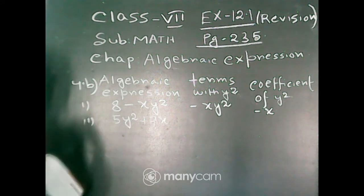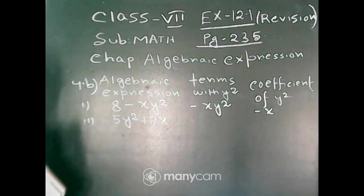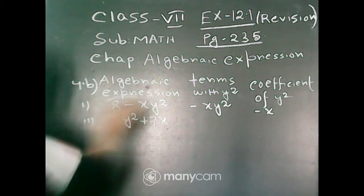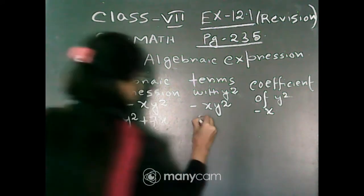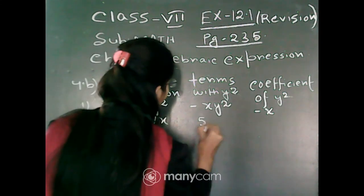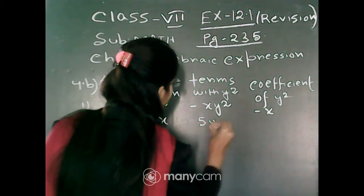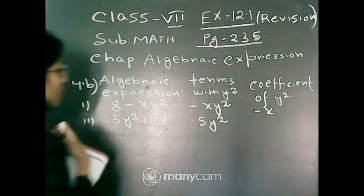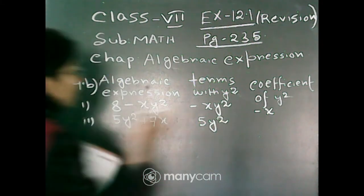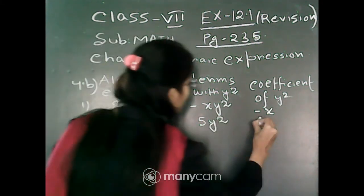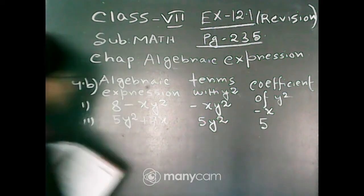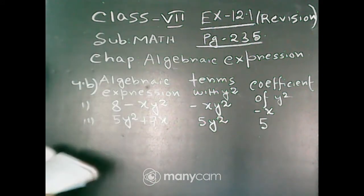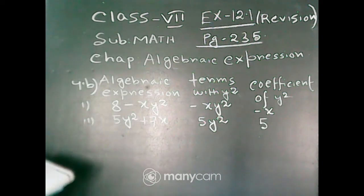Next, question 4b, number 2. Here the algebraic expression is 5y square plus 7x. The term containing y square is 5y square, and the coefficient of y square is equal to 5.